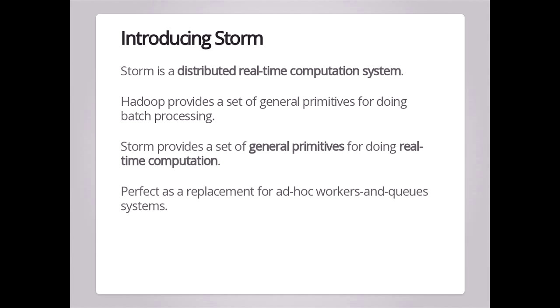Storm is a framework that was developed at BackType, a company acquired by Twitter a couple of years ago. Storm is now an Apache project. Basically, Storm tries to solve this workers and queues problem by turning it into a framework — it's a distributed real-time computation system. You can think of it analogously to Hadoop: Hadoop gives you primitives for batch processing, while Storm gives you primitives for real-time computation or stream processing, running long-running processes operating on a fast-moving stream of data. It's a perfect replacement for that messy system.